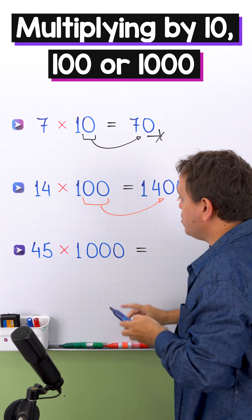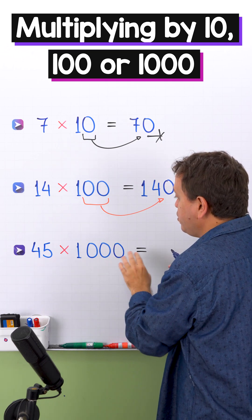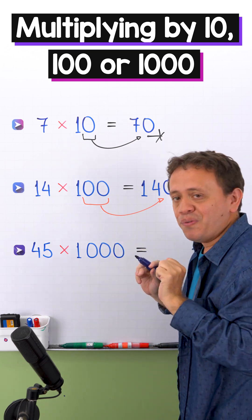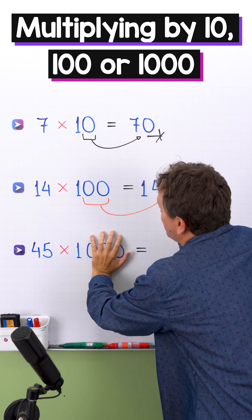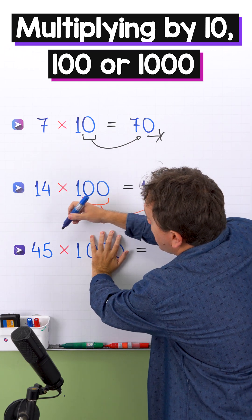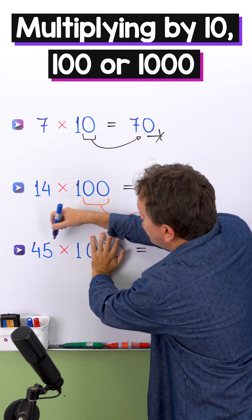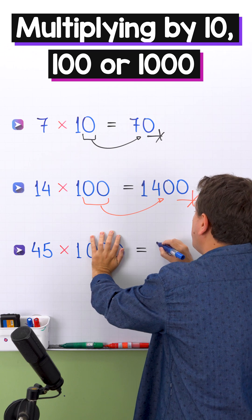In the last example, we're going to multiply 45 times 1,000. You know how this works? First, we need to hide the 0s from the 1,000, and now we have 45 times 1. 45 times 1 equals 45.